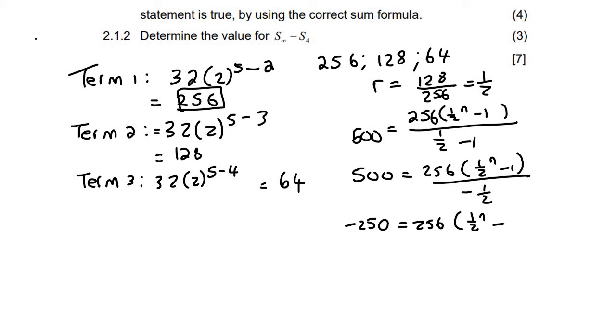And then I can divide by 256, but don't round off for anything guys, it keeps the answer more accurate, so it's minus 125 over 128, rather keep it like that, equals to a half to the power of n minus 1. Then take the minus 1 over to the other side, and that's going to give us 3 over 128.